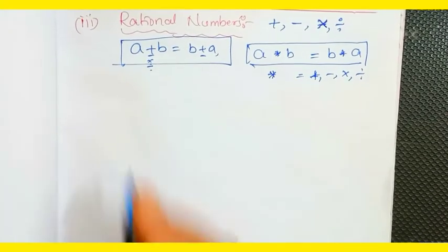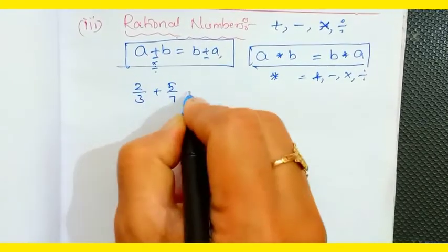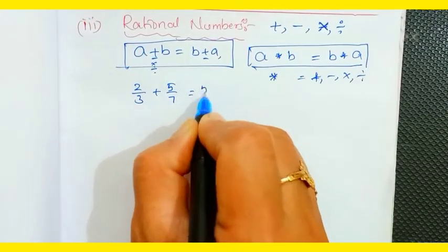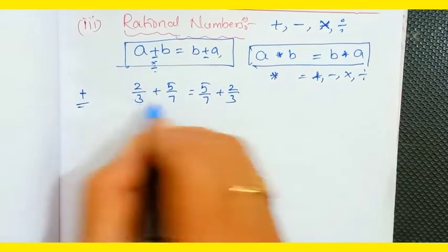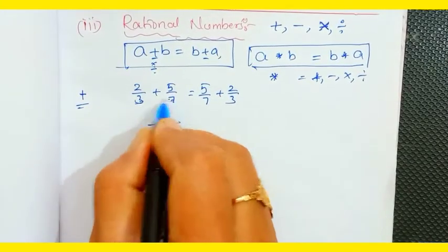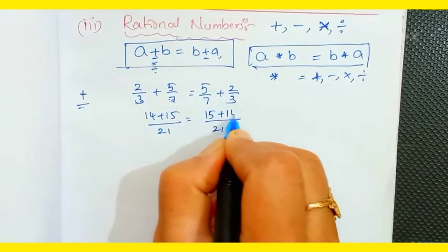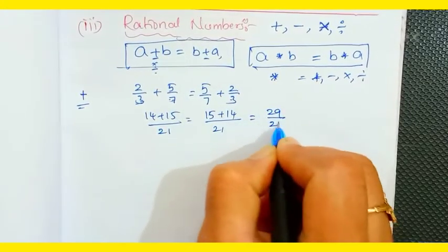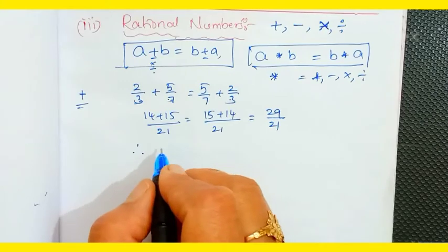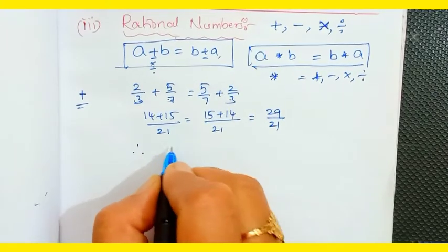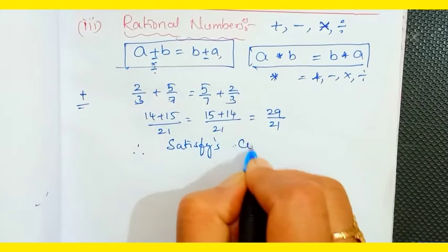For rational numbers under addition: 2/3 + 5/7 equals 5/7 + 2/3. Taking LCM 21: left side gives 14 + 15 = 29/21, right side gives 15 + 14 = 29/21. Both answers are equal. Therefore, rational numbers satisfy the commutative property under addition.